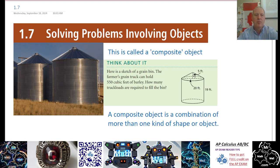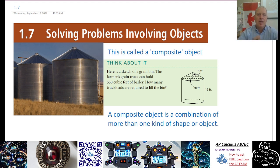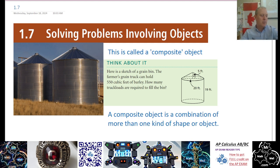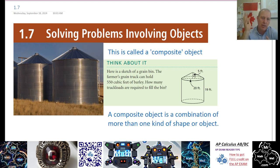The types of objects we're going to be studying today are composite objects — objects that are a combination of more than one kind of shape, or more than one kind of polygon or object stuck together. So in your textbook, you'll see a picture of these grain bins. We live in the heartland of Canada here in Saskatchewan, and there are a lot of grain bins out in the fields.